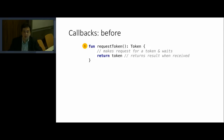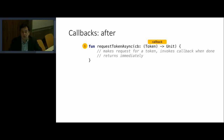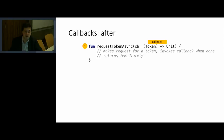We're writing a function that waits, but in order not to block the process and allow the rest of the application to work — show its UI, process other customers — we make it callback-based. Making a function callback-based means we take its return type and put it as an additional argument called a callback. Instead of returning a value, we take this value as a parameter to this callback function, and we make sure that the function itself — like request token in this case — returns immediately. Then, when the value is there, it invokes the callback.